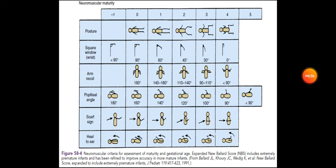The neuromuscular parameters are: posture, square window of the wrist, arm recoil, popliteal angle, scarf sign, and heel to ear. For posture: straight posture carries zero points. Slight change carries one point. Legs slightly flexed carries two points. Arms flexed with legs flexed carries three points. Both arms and legs severely flexed carries four points — known as the frog position.